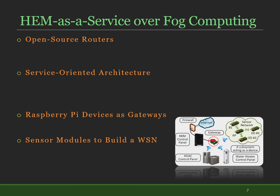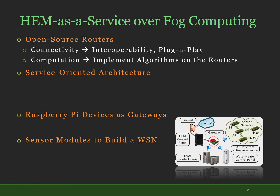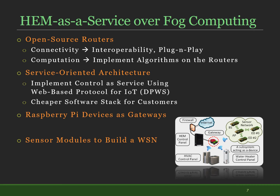We have implemented home energy management over a networking platform called fog computing. Multiple open-source routers are utilized to provide the connectivity and computation required. Since the computation is at the edge of the network, it is called fog computing. Customizability has been achieved by implementing control as a service using a web-based protocol for IoT. This service-oriented architecture enables a dynamic, adaptive software stack, making it cheaper for consumers. It also enables us to abstract the heterogeneity existing in lower layers, such as different physical layers and communication protocols. Some devices may use various communication protocols like Ethernet, Wi-Fi, or ZigBee. Hence, we have used Raspberry Pi devices to relay data for incompatible devices.